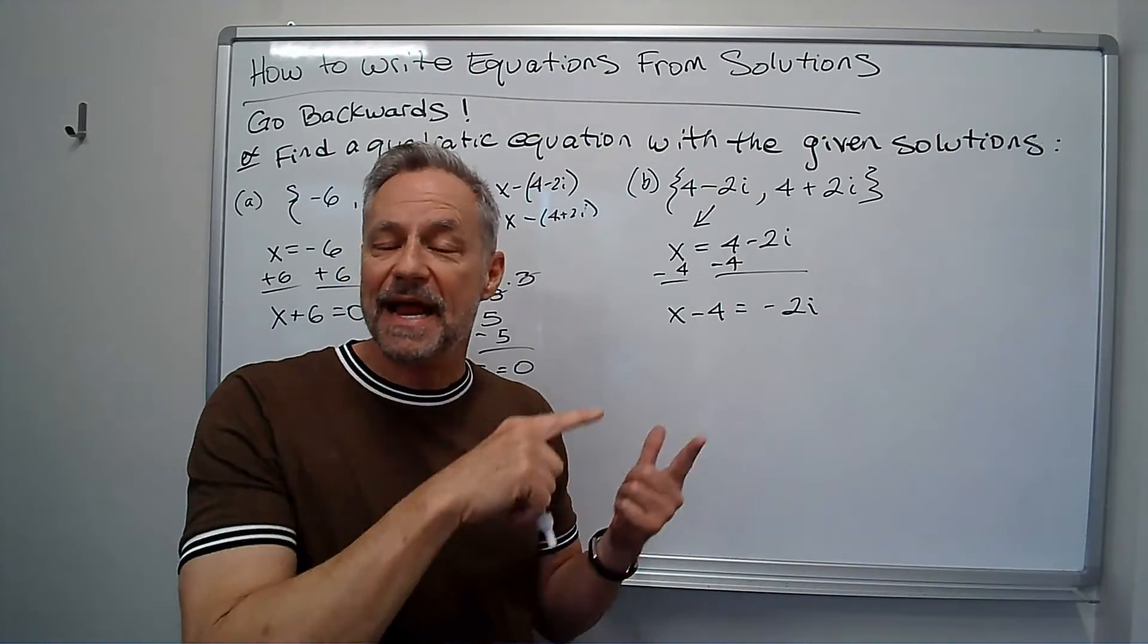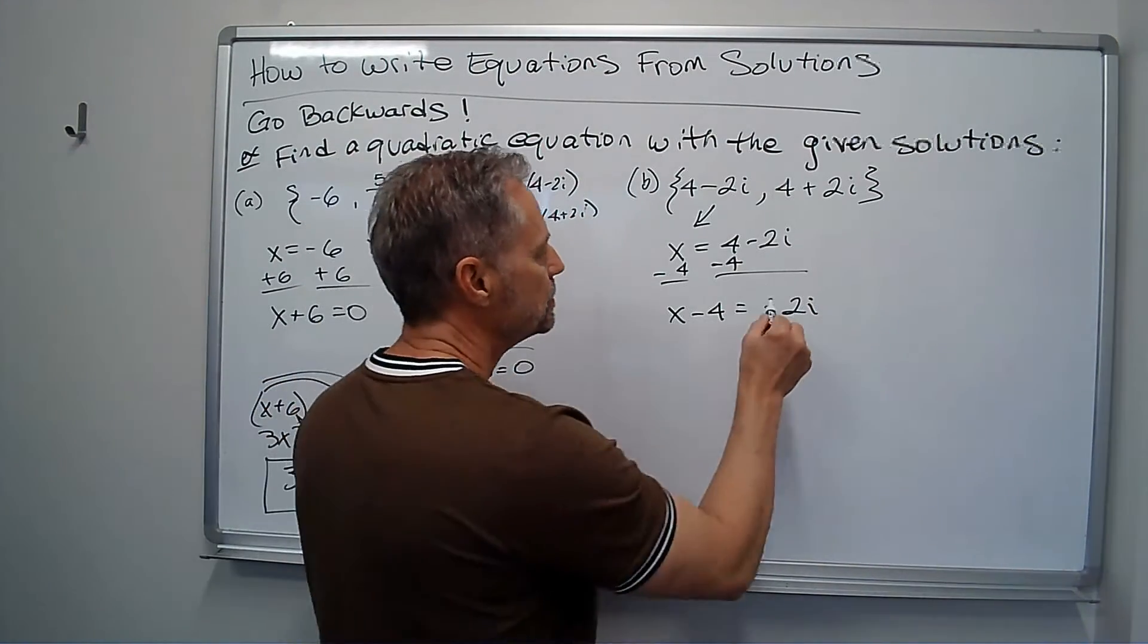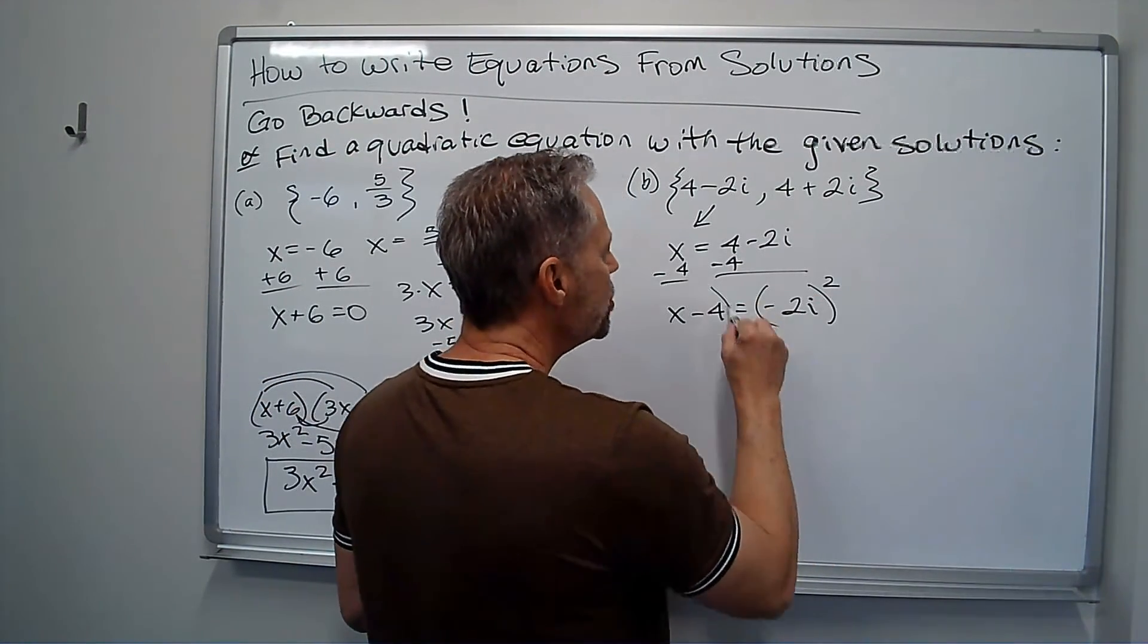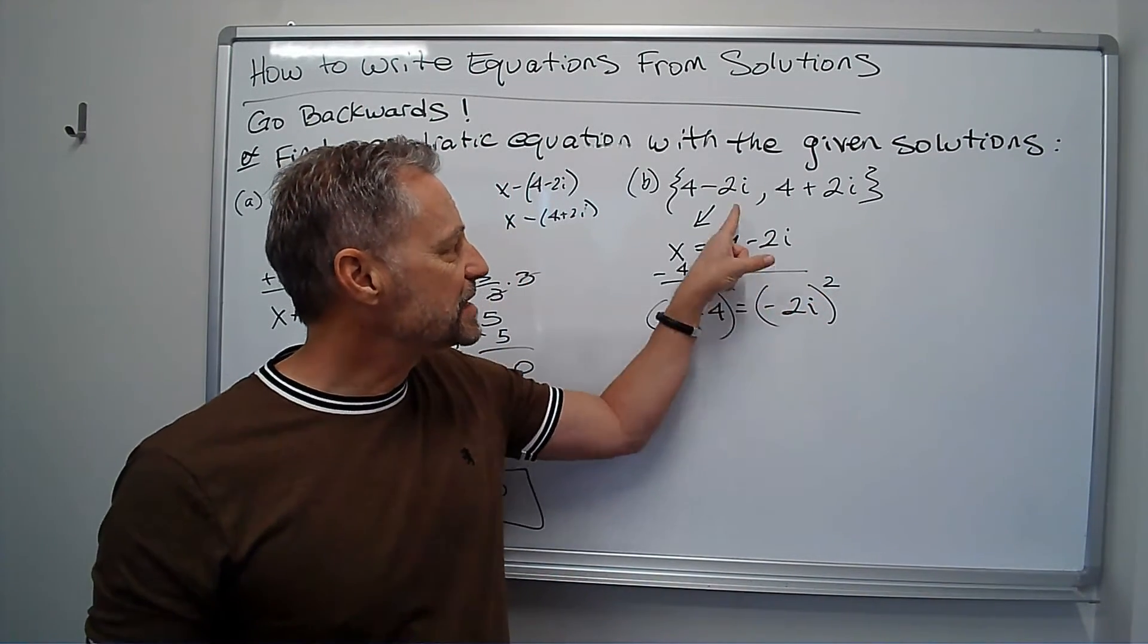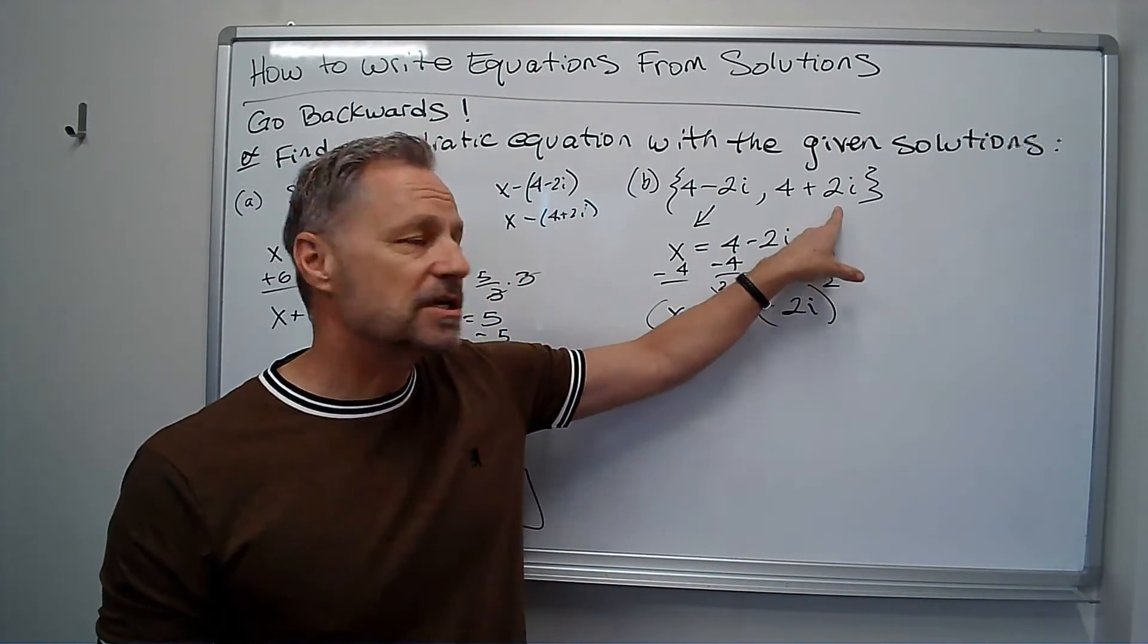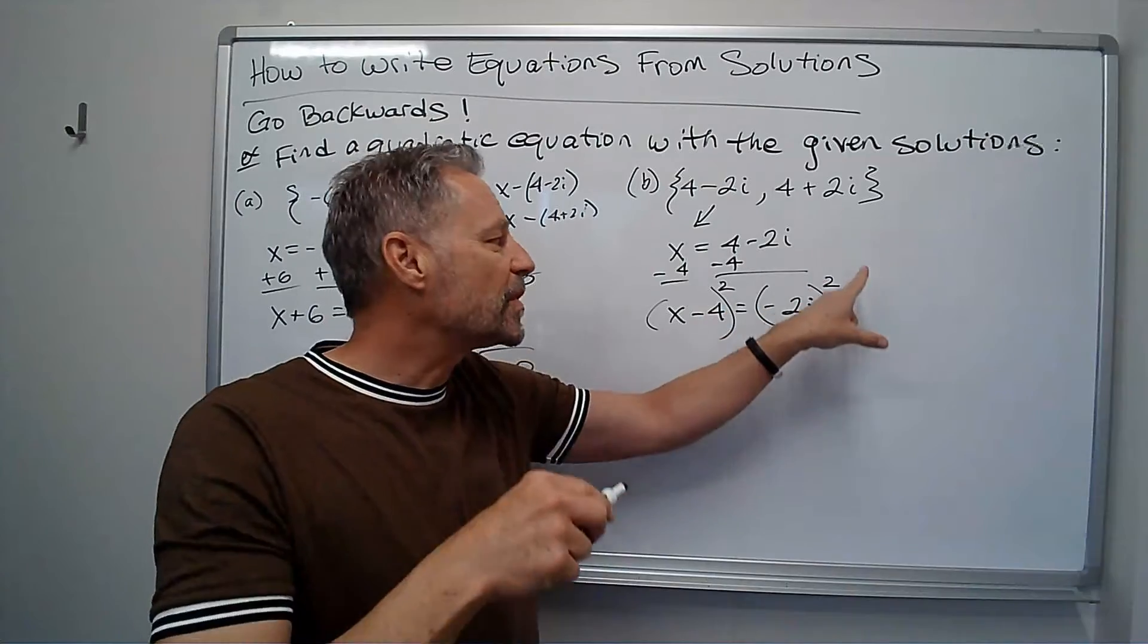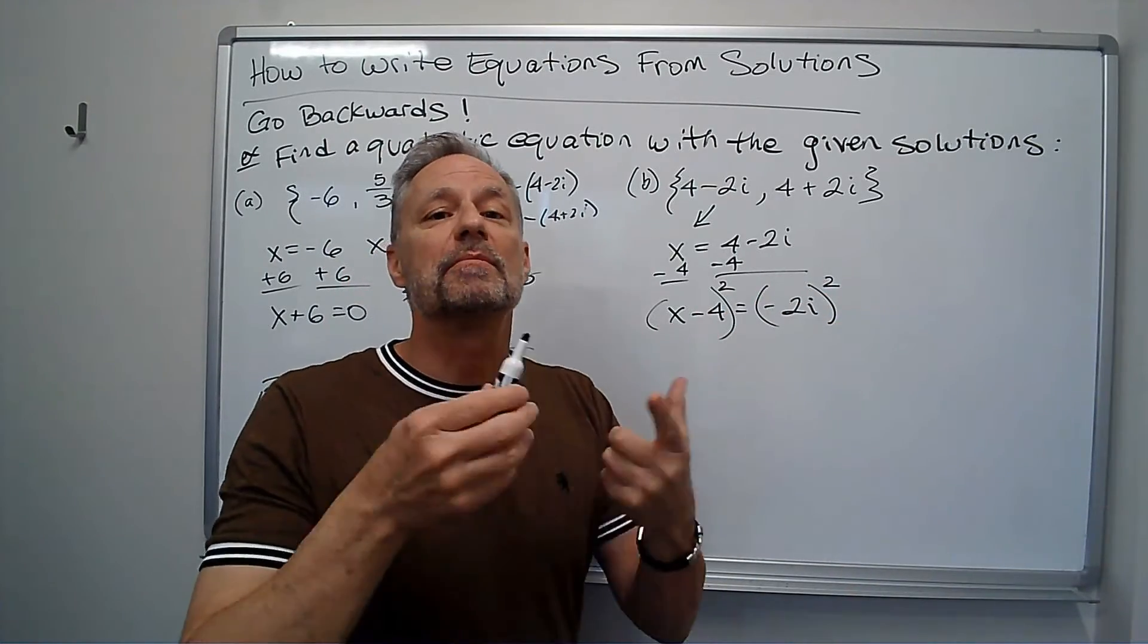And then to get rid of the i, I'm going to square both sides. Notice it didn't matter which one we use because it's either going to be negative two i squared, or it's going to be positive two i squared. Either way, the square gets rid of the negative, they're both going to be four i squared.